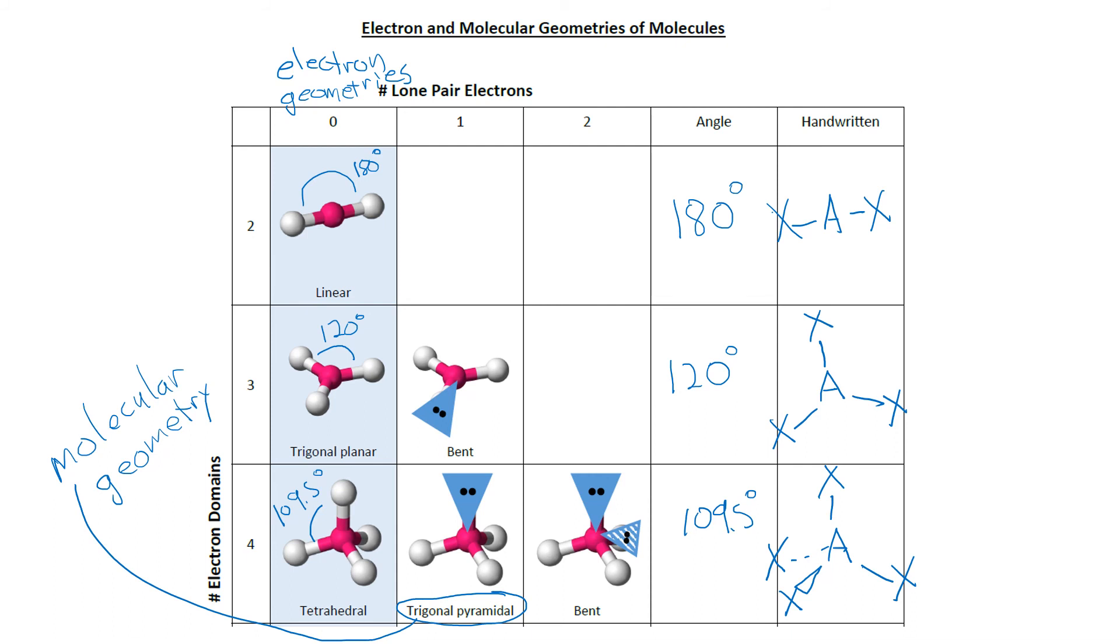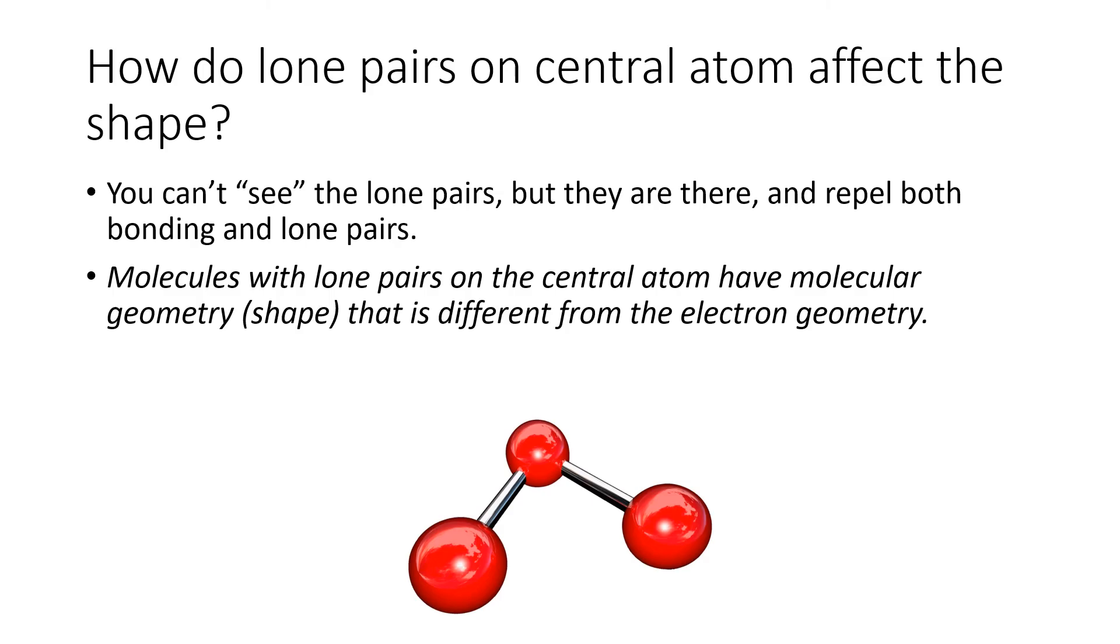In the case of no lone pairs on your central atom, the electron geometries and the molecular geometries are the same. In the case of having lone pairs, the electron geometry is given by the first column and then the actual molecular geometry is given by the name in the subsequent column.